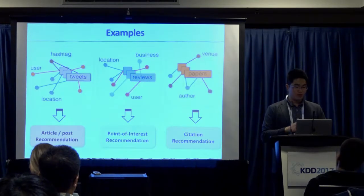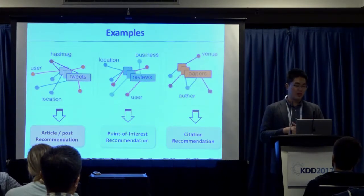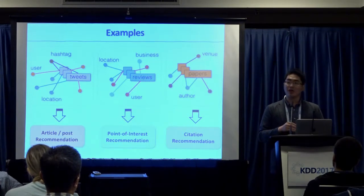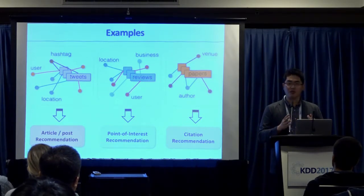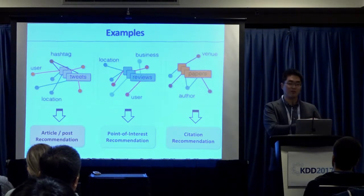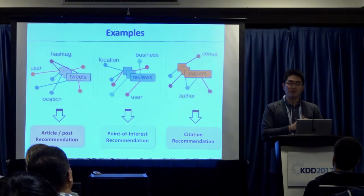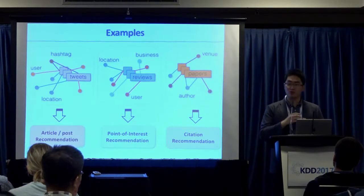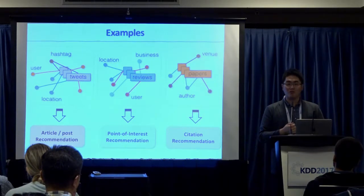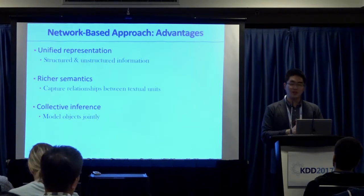Now we're thinking: why not use information networks as the form of the model to unify everything? You can put documents together with concepts, entities in the documents, and many other things. For example, in tweet or article recommendation, you can put tweets together with hashtags, tweet authors, and entities mentioned in the tweets — organizations, person names, locations — giving a much richer representation combining the structural social network part and the semantic meaning of the tweets.